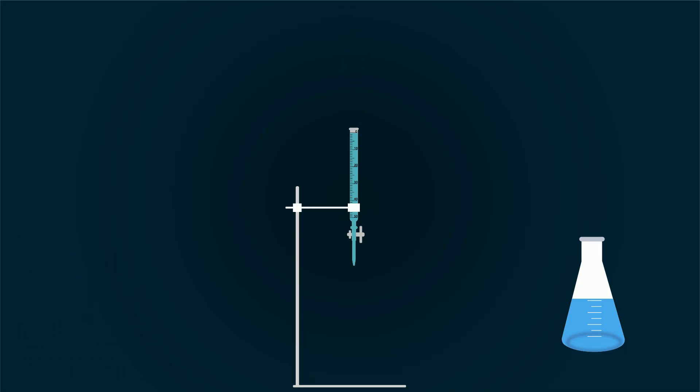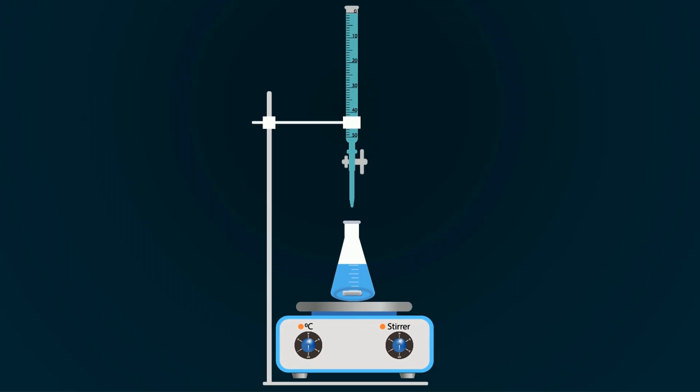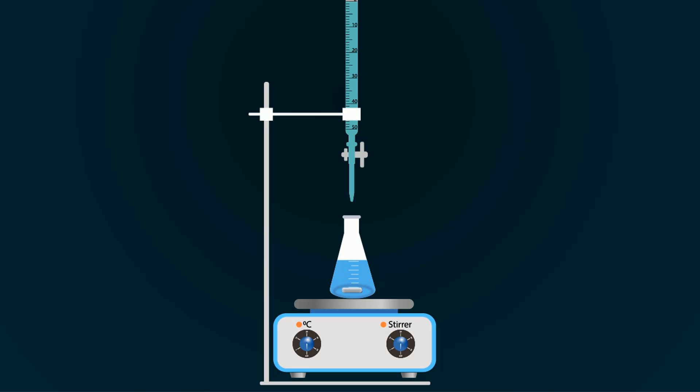Now put magnetic stirrer and add magnetic bar into the conical flask. Now put this conical flask on the magnetic stirrer and power it on, so the magnetic bar starts rotating.